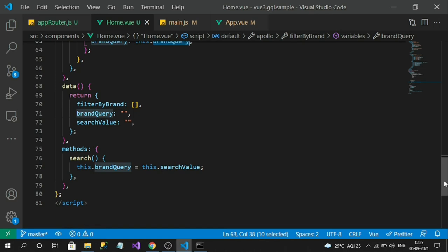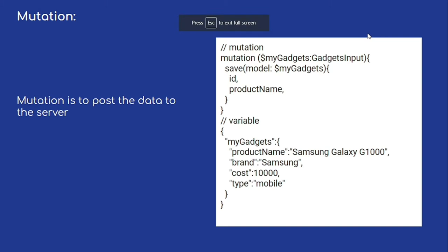Finally, we touch on mutation — the last major topic. Mutation is used to post/save data to the server. Like query for fetching, mutation is for storing data. A mutation has a variable that contains the data to be posted, and in the response you can specify which properties to return — for example only id and productName — even though you posted many more fields.